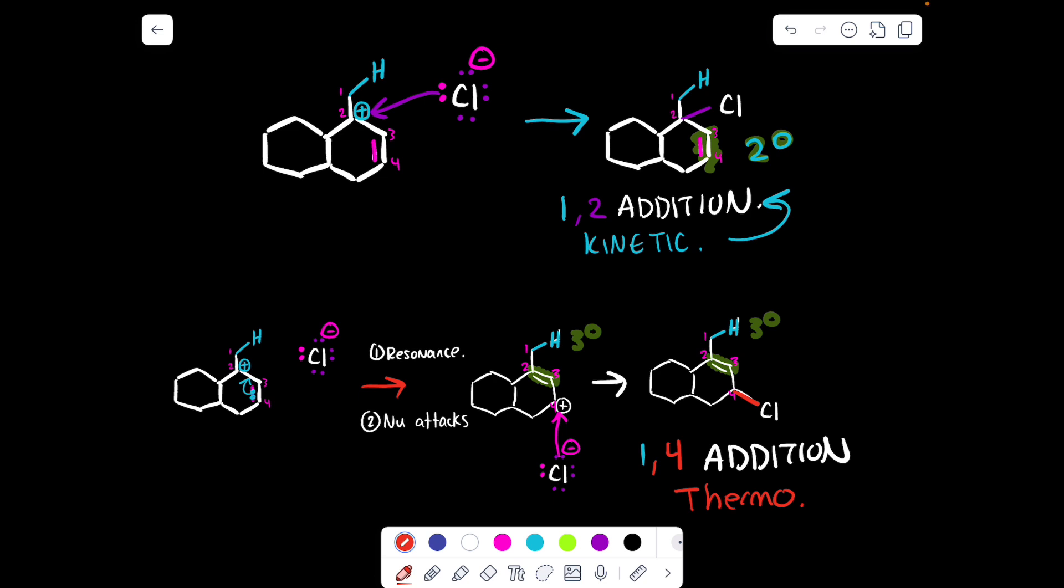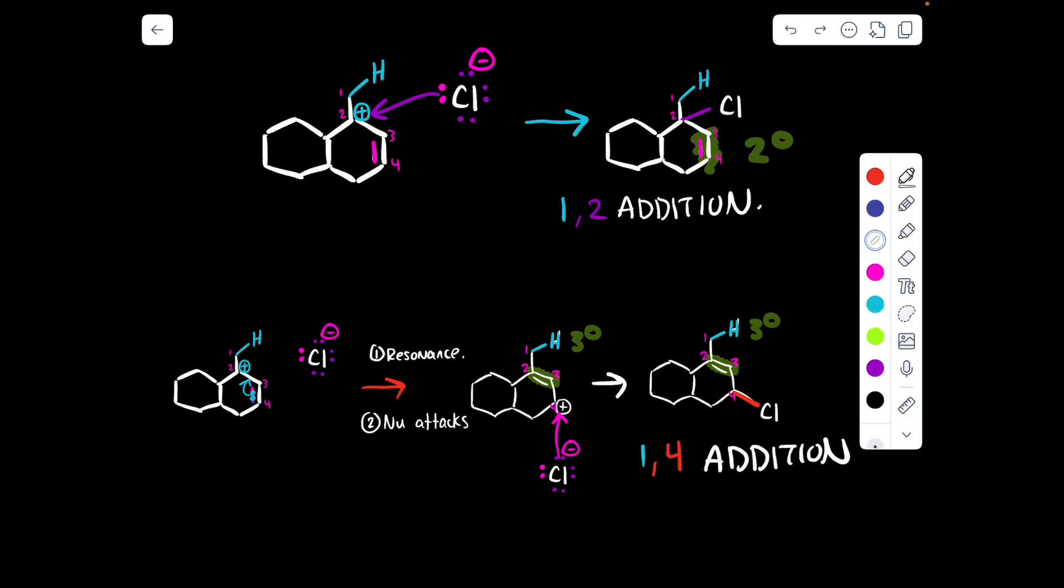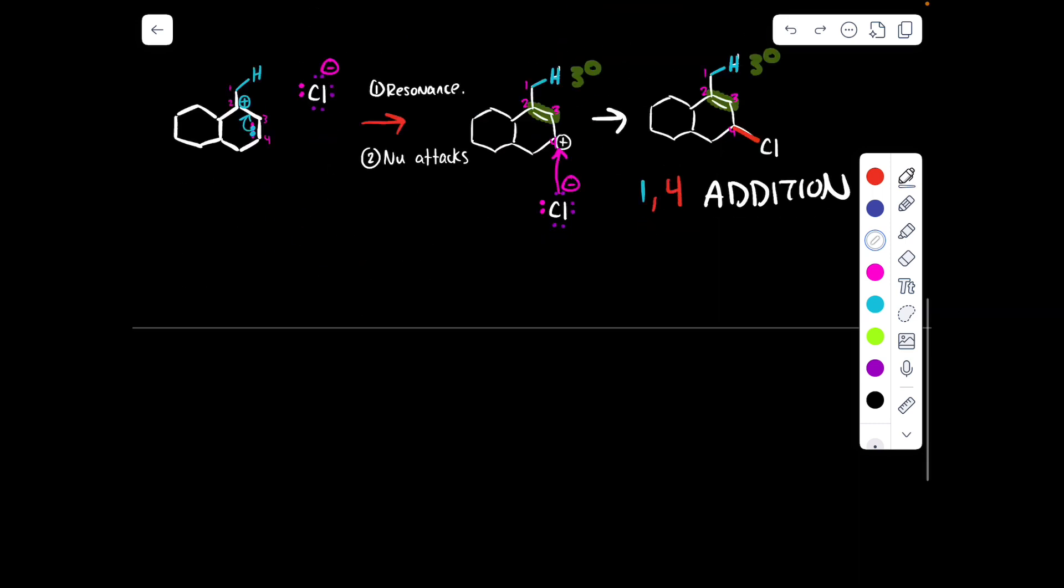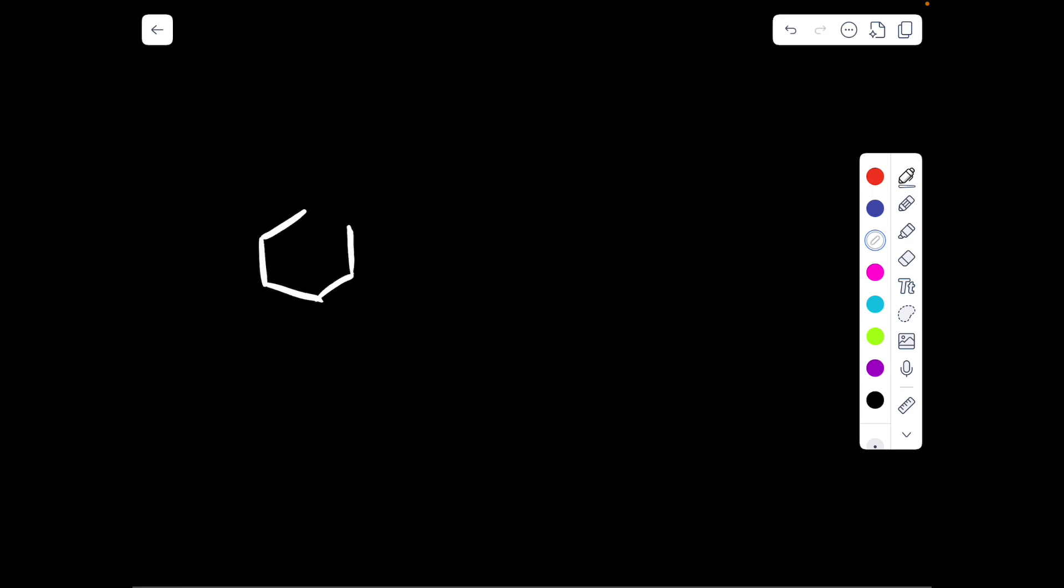So yes, a lot of the time, your 1,2 addition product does end up being the kinetic, and the 1,4 addition product does end up being the thermodynamic product, but this is not always the case. So now I'm going to explain the general procedure to go about solving these problems. So how to generally take a diene and get your 1,2 and your 1,4 addition product, how to choose what double bond, and where to put the carbocation.